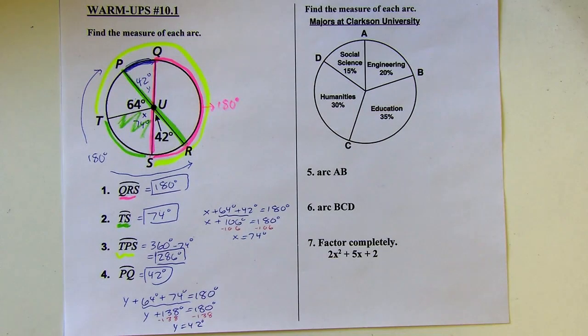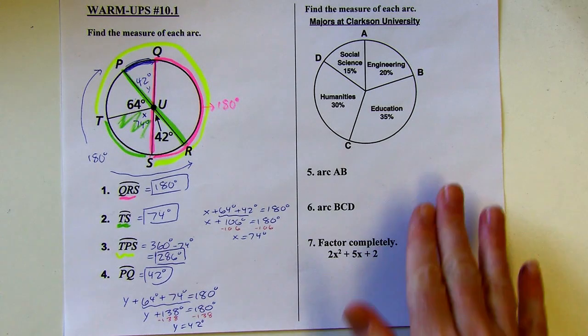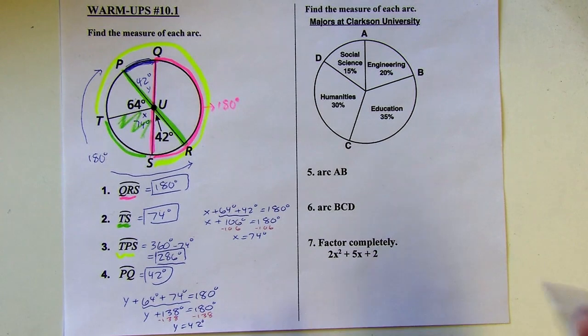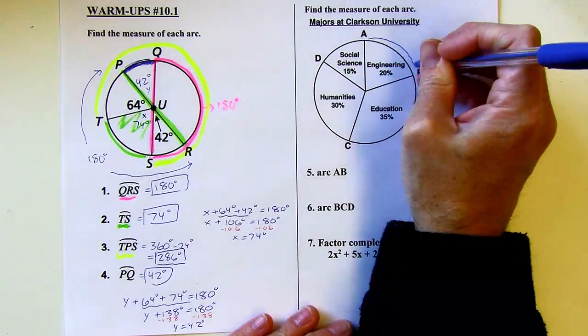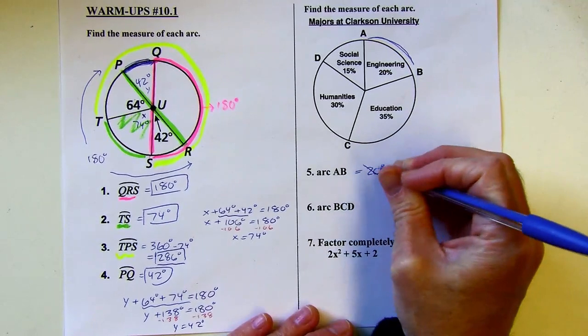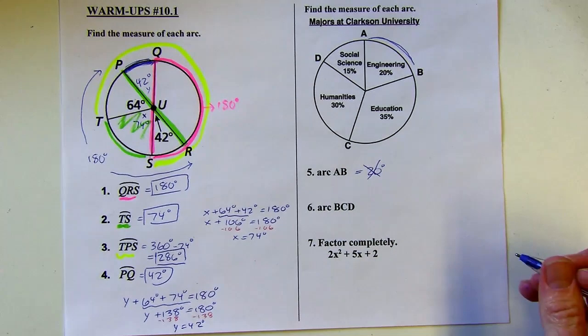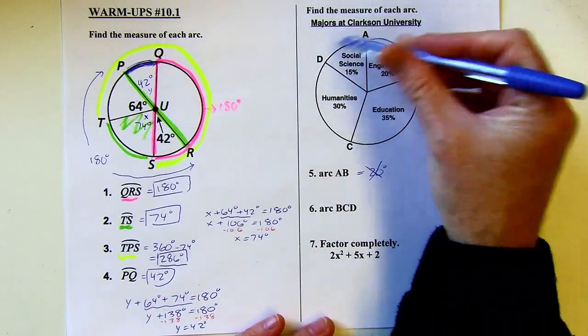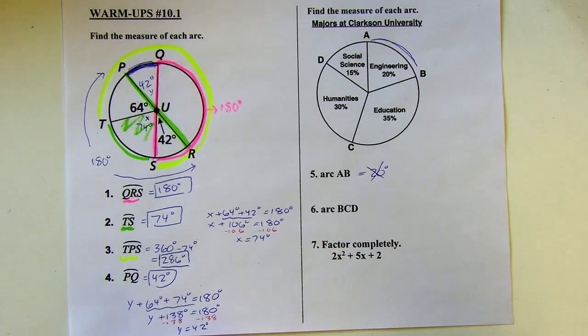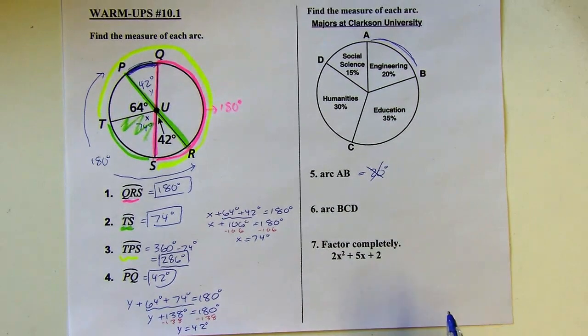Okay, all right. Next up, we're going to find the measure of each arc here. We've got Clarkson University, and we've got the different majors that people are taking. We're going to start with the measure of arc AB. So arc AB, all right, we're dealing with this. So the common mistake here is to say, oh, 20%, so this is 20 degrees. Oops, it's not 20 degrees because it's 20% of the whole circle, but the whole circle is not 100 degrees. If the whole circle is 100 degrees, yeah, it'd be 20 degrees, 20% of 100. But this is going to be 20% of 360 degrees.